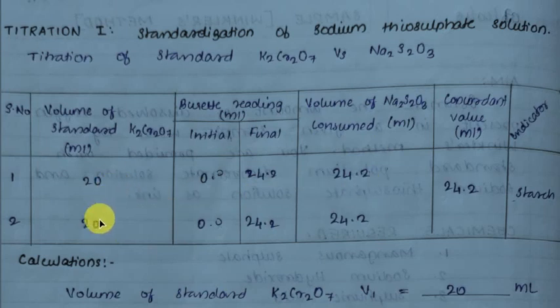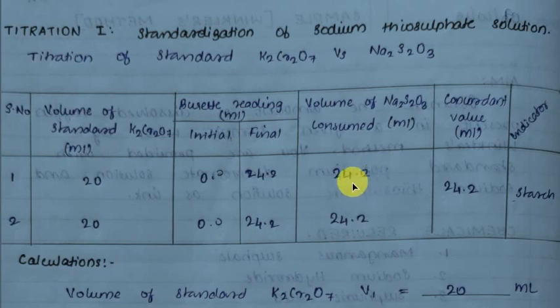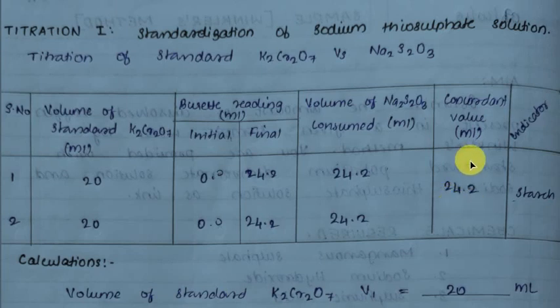We perform the titration twice to obtain a concordant value. Both readings give 24.2 ml, which is the concordant volume. We then proceed to calculate the strength of sodium thiosulfate.